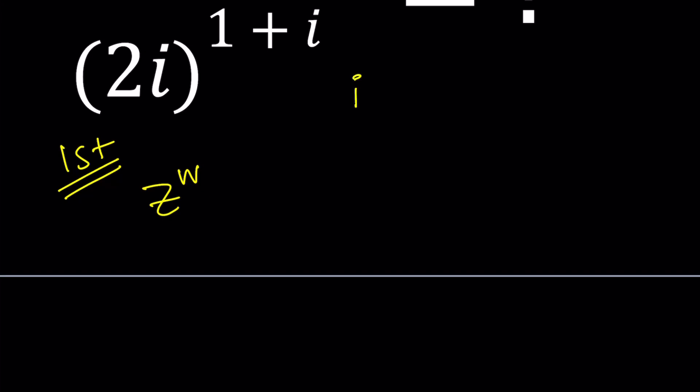like whenever you have something like i to the power i or 1 plus i to the power 1 minus i, it's kind of crazy. How could you write 1 plus i, 1 minus i times and multiply? We're not talking about writing something this many times. It's different.